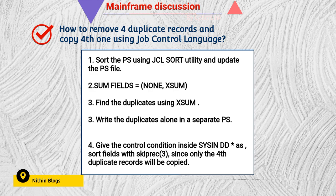Using XSUM, we can write all duplicate records into a particular dataset. Then on that dataset, we use the SORT utility again with SORT FIELDS and use SKIPREC equal to three. This means the first three records will not be selected, and the fourth one will be copied.